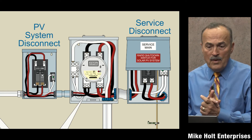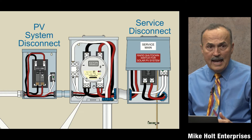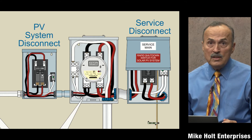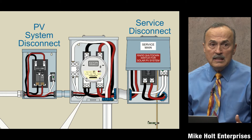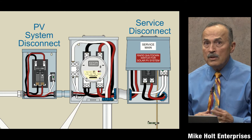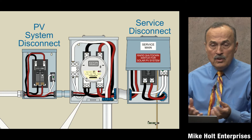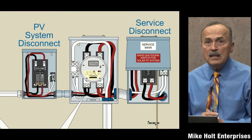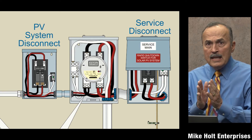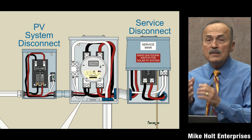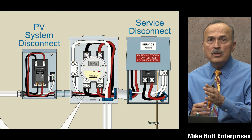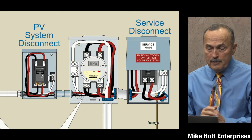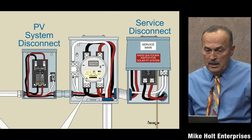This is not directly 705, but it's related: when making a supply side connection, the conductors going into the PV system disconnect are not service conductors as per the Article 100 definition. Service conductors, per Article 100, are those from the utility that terminate at the service disconnecting means. So this PV disconnect is not a service disconnect, and these are not service conductors.